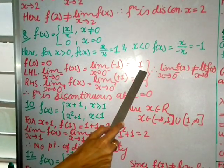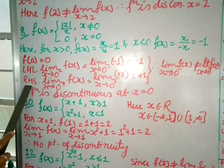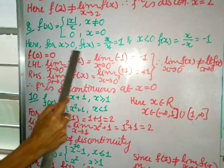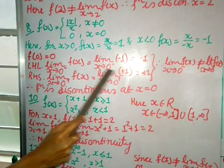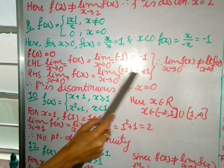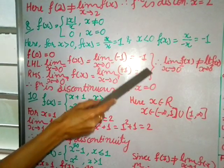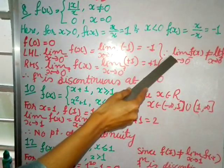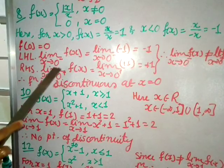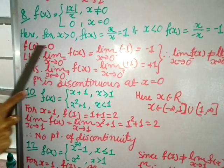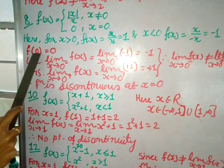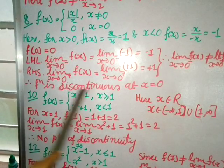The right-hand limit lim(x→0⁺) f(x) uses the x > 0 case, giving +1. Since the left-hand limit (−1) ≠ right-hand limit (+1), and neither equals f(0) = 0, by the definition of continuity the function is discontinuous at x = 0.